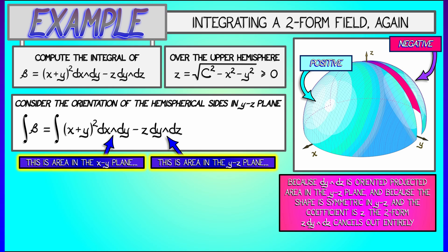If you think about what this component of the two-form field is actually doing, the front half and the back half cancel each other out when you do the integral.